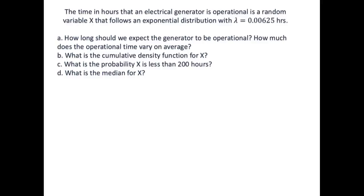In this video I'll show you how you can solve problems for a random variable that has an exponential distribution. The time in hours that an electrical generator is operational is a random variable X that follows an exponential distribution with the parameter lambda equal to 0.00625 hours.